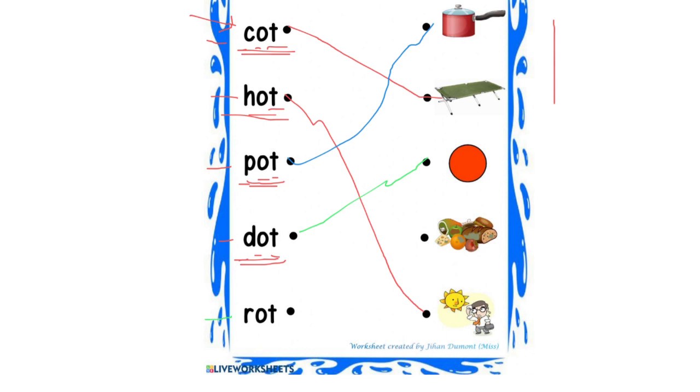And the last word: r-o-t, rot, rot. Where is the rot picture? Yes, this one. Can you think of other words that end with ot? Name it for me please. Well done everybody.